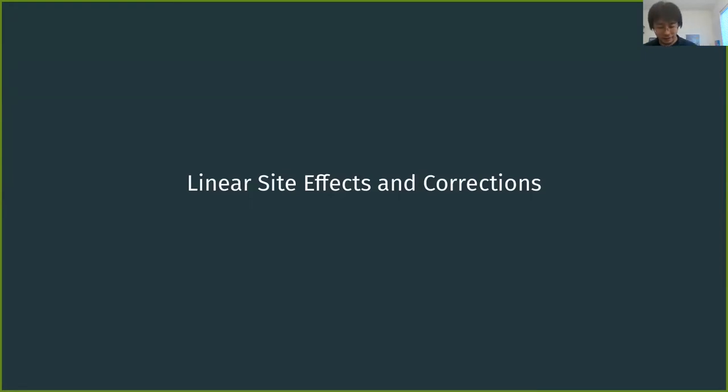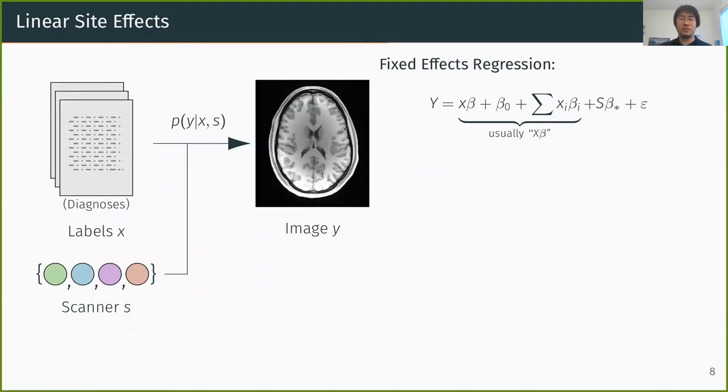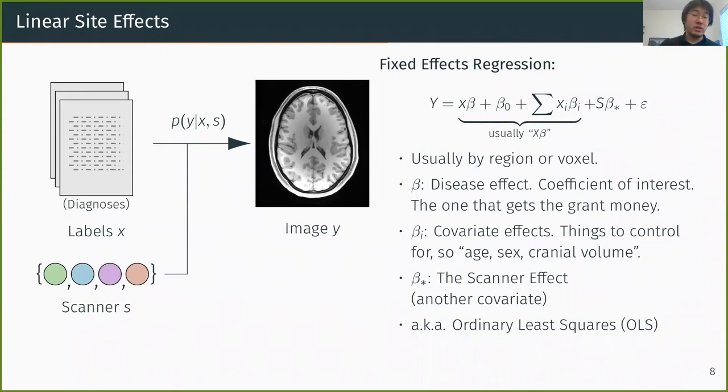What do I mean by a linear site effect? So, on the left, we have labels and scanner contexts. And on the right, we have an image from which we want to extract relationships between labels and images. And on the far right, we have the model, the linear model, which we usually use to do this. We have written out all the covariates. So, we have X and beta, which are the variable of interest. And then the Xi, which are these other covariates, maybe sex and age and intercranial volume confounders, maybe. And then alongside this, we have a site effect beta star. Right? So, we usually do this by region or maybe even voxel, voxel-wise analyses.